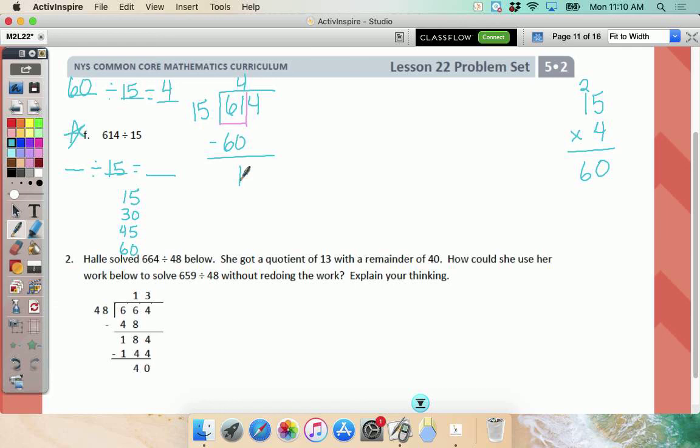So now is 1 less than 15. Yes. Bring down my 4. So what number over to the side is closest to 14 without going over? Zero. So that means 0 goes on top. And so my remainder, is my remainder less than my divisor? Yes. So this should work.